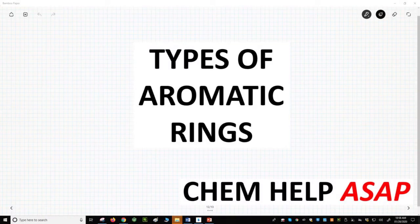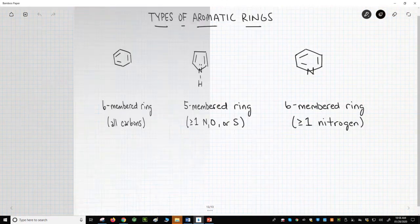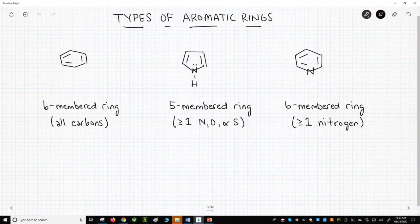Hello from Chem Help ASAP. Let's talk about some aromatic rings other than benzene. We have three different aromatic rings across the top of the screen. These three rings are examples of the three types of aromatic rings you commonly encounter.